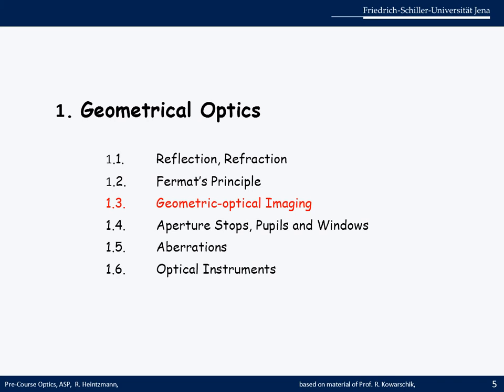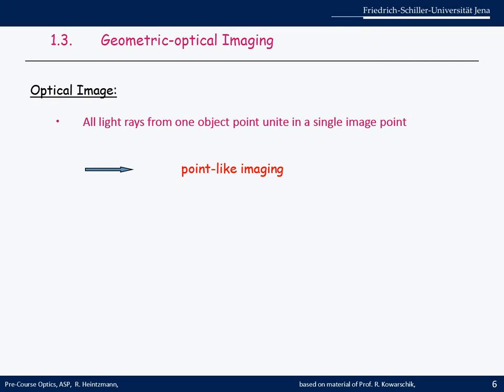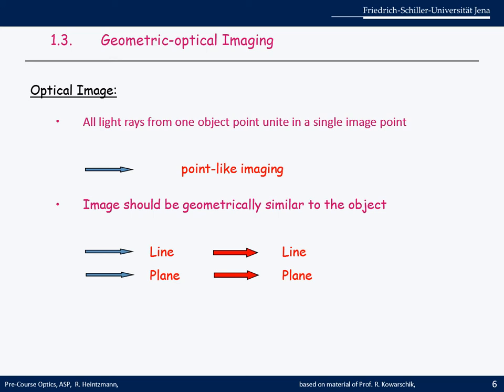Now we are going to deal with geometric optical imaging by a few examples. The first rule is all light rays from one object point unite in a single image point. That's only true for optics that forms images. This is how we work out where the image is and how big it is, called point-like imaging. The image should be geometrically similar to the object, meaning a line should become a line and a plane should become a plane. This is called Gaussian imaging.